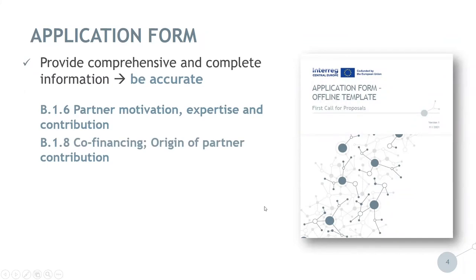In section B.1.8, partners need to define the origin of their contribution to the project budget — this is the 20% partner contribution. Make sure that the source of partner contribution indicated in this section is correct. Co-financing of a partner can be secured through the partner's own resources, through external funds, or a combination of both. For State Aid purposes, it is relevant to indicate if partners intend to use external public financial contributions to their budget, for example ad hoc co-financing schemes set up at the national or regional level for participation in Interreg projects — so-called match funding.